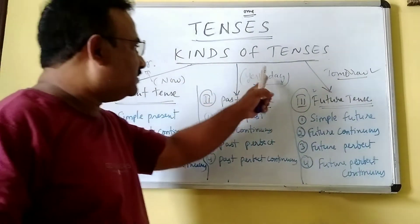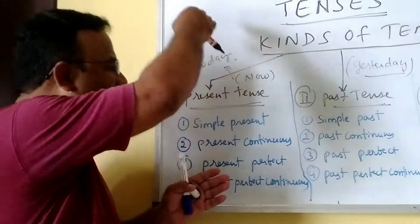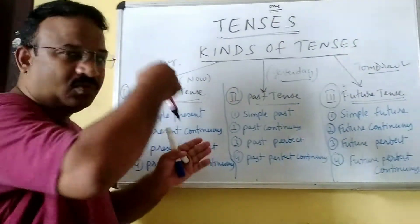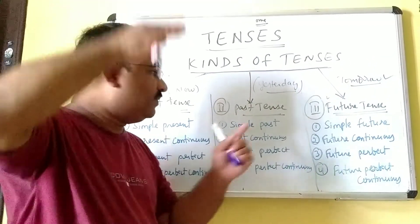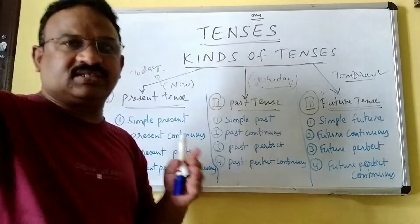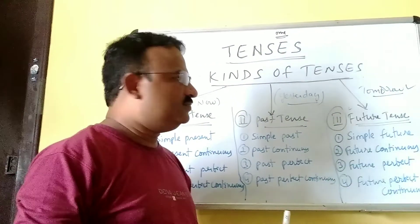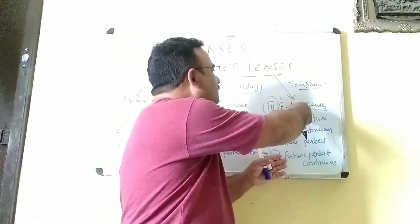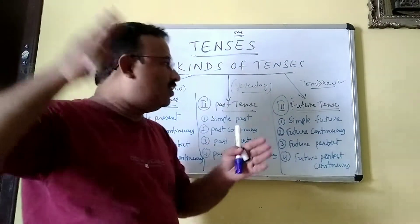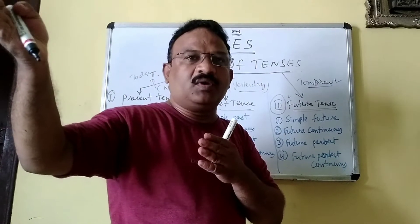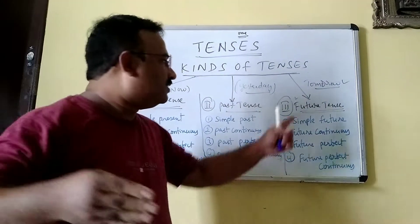Today means present tense — now, current. Yesterday means past tense — whatever happened yesterday or before yesterday is all past tense. Tomorrow means future tense — we don't know what will happen in the future, what will happen tomorrow. That is future tense.